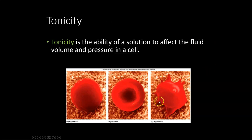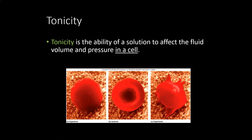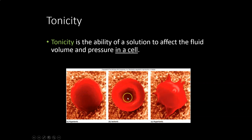Tonicity describes how a fluid will either allow water into a cell, make water escape a cell, or maintain equilibrium. There are three options: hypotonic, isotonic, and hypertonic. Latin roots help here: hypo means less than, iso means the same, and hyper means above or excessive. Hypertonic means more concentrated than inside the cell; isotonic means the same concentration; hypotonic means less concentrated than inside the cell.